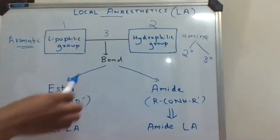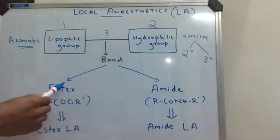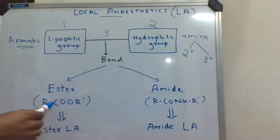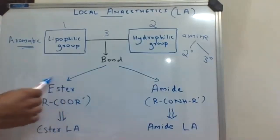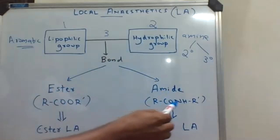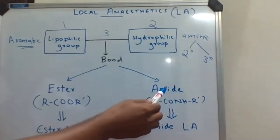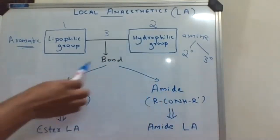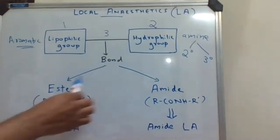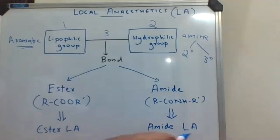Now, this connecting bond could be either an RCO-R' group, which is an ester functional group, or the connecting bond could be an RCO-NH group, which is an amide functional group. So based on the connecting bond, we can classify local anesthetics into either ester local anesthetics or amide local anesthetics.